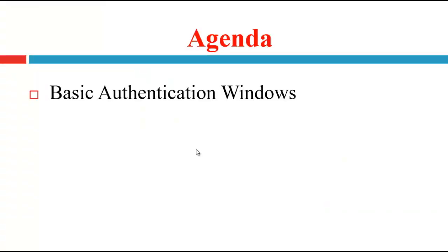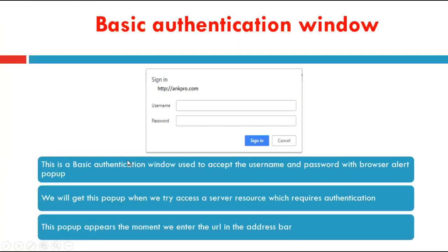Basic Authentication Windows. First, we will see what is a basic authentication window. This is what the basic authentication window looks like. It is used to accept the username and password with a browser alert pop-up. We get this pop-up when we try to access server resources which require authentication. This pop-up appears the moment we enter the URL in the address bar.